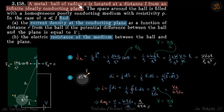We are given a metal ball of radius A located at a distance L from an infinite ideally conducting plane. The ball is placed inside a medium whose resistivity is given as rho. We need to find the current density at the conducting plane as a function of R, given a potential difference of V between the ball and the plate. We also need to find the electrical resistance of the medium.